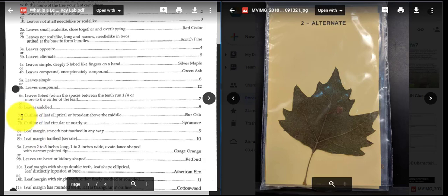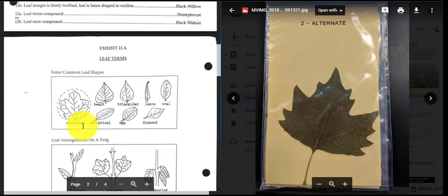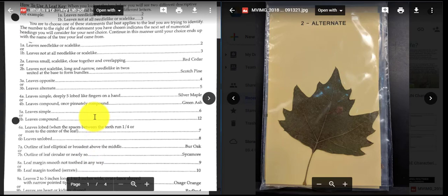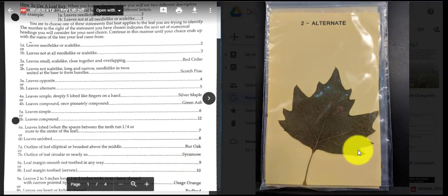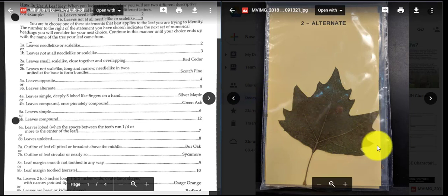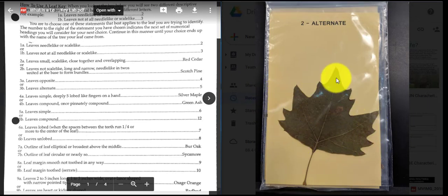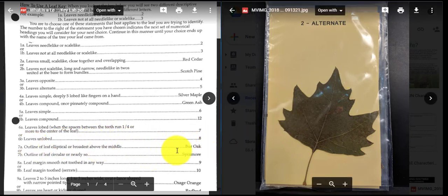Now, couplet number seven says, is the outline of the leaf elliptical or broadest above the middle, or does the outline of the leaf make it circular or nearly so? So if I forget the shapes here, remember circular, if you connect the points of the teeth, it kind of gives a circular shape to the leaf. And elliptical is going to be kind of like, again, long and narrow, but this also says that the top of the leaf or the area above the middle leaf is broad. So when I take a look here, I notice that the broadest or widest part of my leaf is below the middle. So if the middle of the leaf is right here, I notice it's broader down here than up there. So that automatically disqualifies bur oak as my choice.